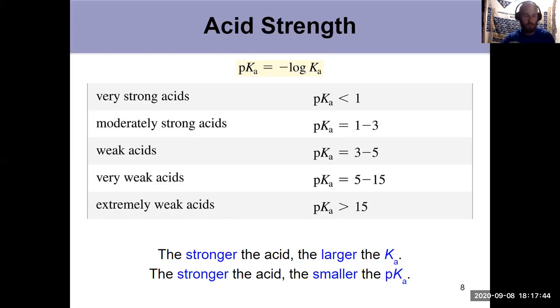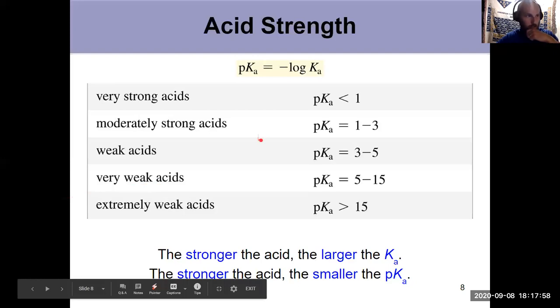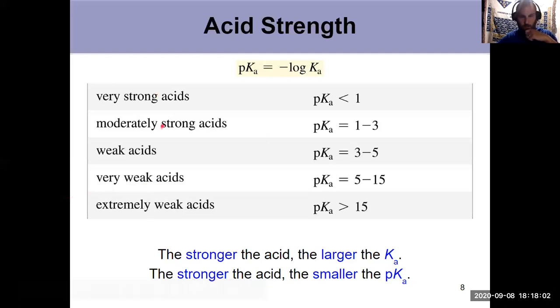The stronger the acid, here we're looking at strength in water, but the lower the pKa. Stronger the acid, the lower the pKa. Here's a general guideline for looking at strengths. Less than one, very strong. Then we've got moderately strong, weak, very weak, extremely weak.